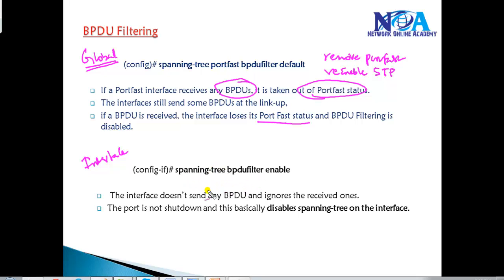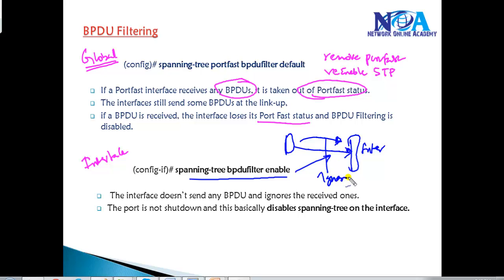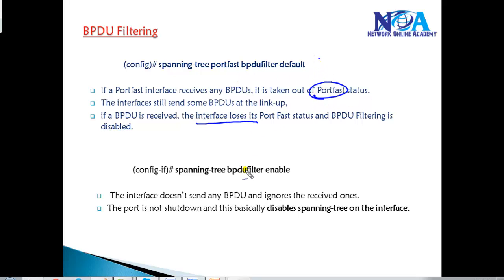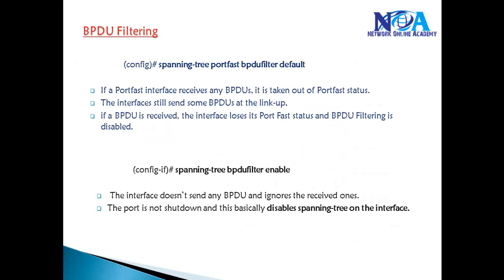When BPDU Filter is enabled on the interface level, the behavior is slightly different. If the interface receives any BPDU message, it simply ignores those messages — it does not accept them and the port does not go into shutdown state. This means spanning tree is not running on that port; the BPDUs are simply ignored. In global configuration mode, BPDU Filter disables Port Fast and re-enables spanning tree, whereas in interface mode, it ignores received BPDUs and the port remains in Port Fast state without running spanning tree.